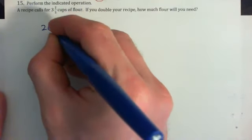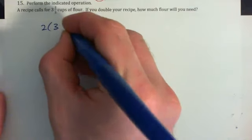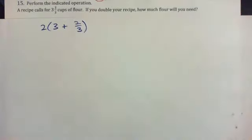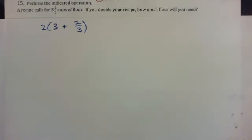Now, three and two-thirds is the same thing as three plus two-thirds. So we can go two times three plus two-thirds, right? And what we're going to do is the distributive property.